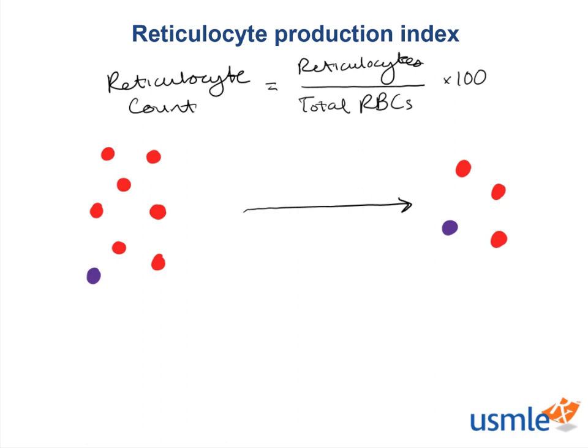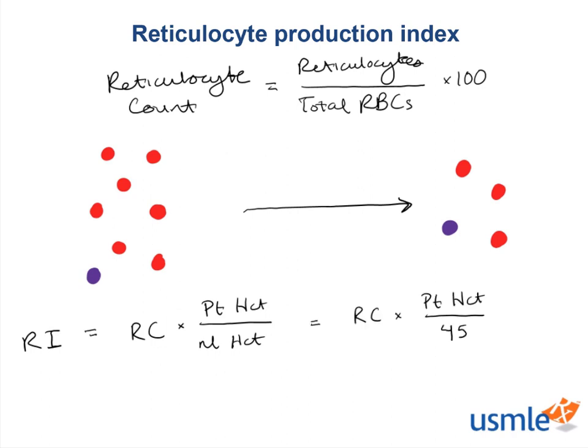Because we have a math problem, we need a math solution — and that's where reticulocyte index comes in. Another word for reticulocyte index is corrected reticulocyte count. We correct this value by proportioning the reticulocyte count to the degree of anemia. You multiply the reticulocyte count by the patient's hemoglobin or hematocrit divided by the standard normal hemoglobin or hematocrit. In practice, we use hematocrit because it's a bigger number and gives less numerical variation, standardizing normal hematocrit to 45. So reticulocyte index = reticulocyte count × (patient's hematocrit / 45).